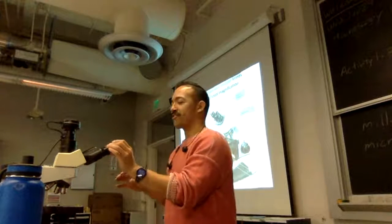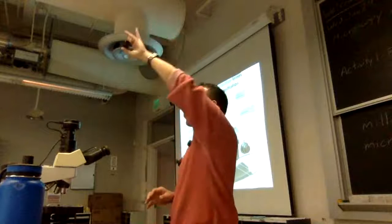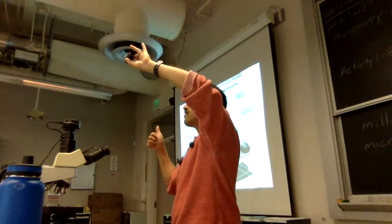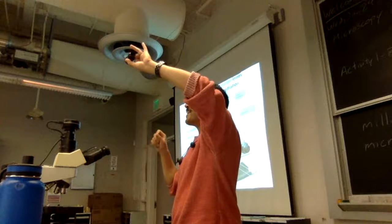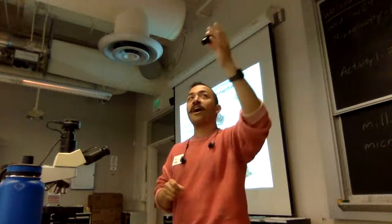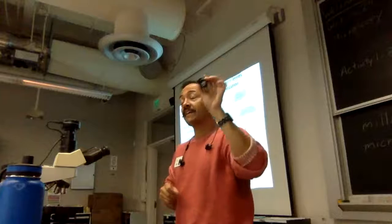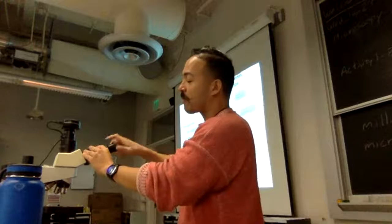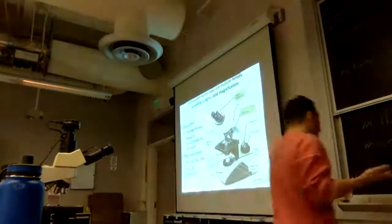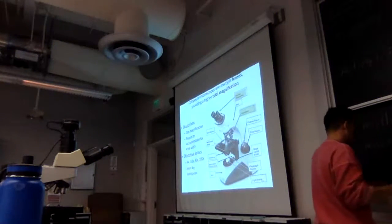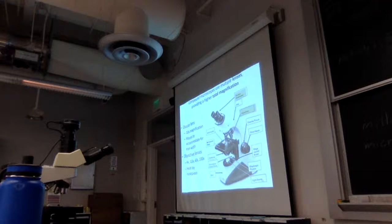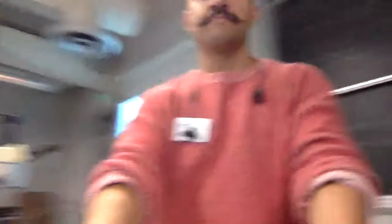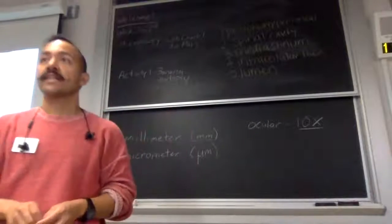Don't do this, but I'm going to take it out so you can see. This is the ocular lens. These are the ocular lenses. The magnification that these lenses provide — there are two of them, one for each eye — the magnification that they provide is 10 times magnification. The way to represent that is 10x. Ocular lenses provide 10 times magnification.